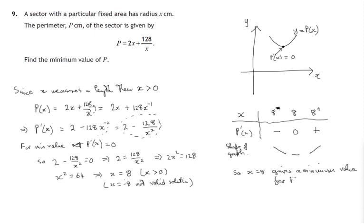And what is that minimum value? Well, we'll go to the formula for p and plug in the value of 8. So we'll get 2 times 8 plus 128 divided by 8. So that's 16 plus 16. That's 32. Required minimum is 32.